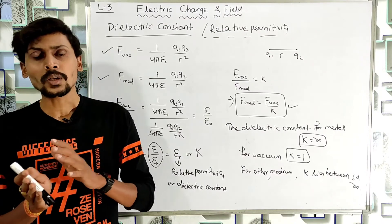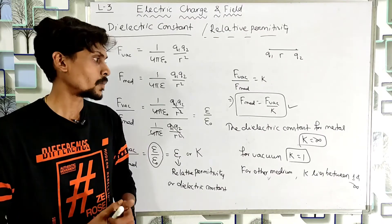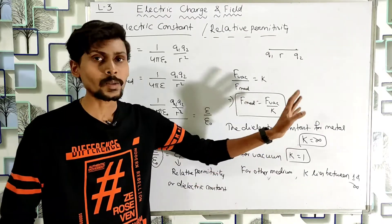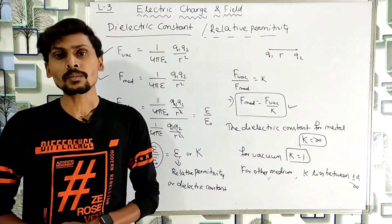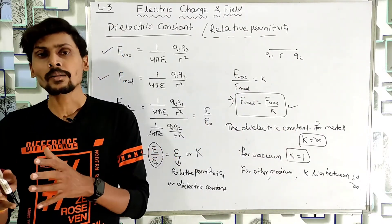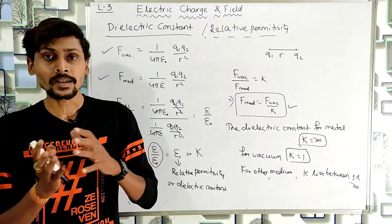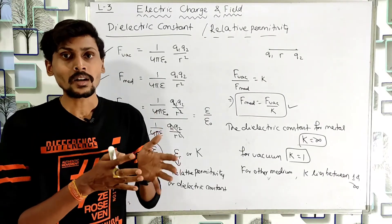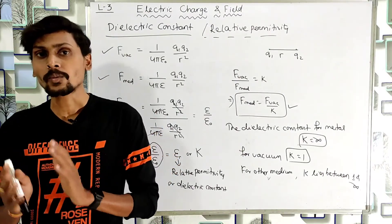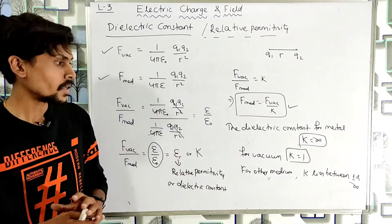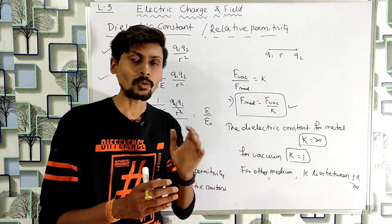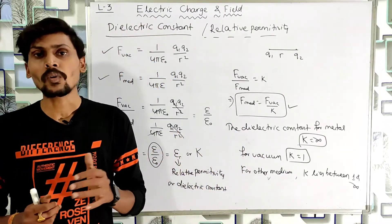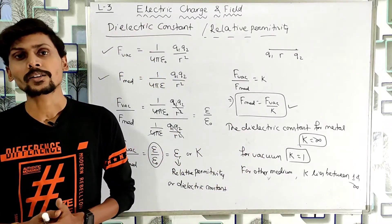If we consider metals, K is infinite. For media that are neither metal nor vacuum, the value of K lies between 1 and infinity.